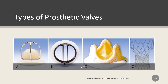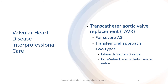Valve types shown include: A — the Starr-Edwards caged ball valve; B — the St. Jude's bi-leaflet valve; C — the Carpentier-Edwards porcine valve; and D — the CoreValve transcatheter aortic valve. Transcatheter aortic valve replacement, or TAVR, is an option for patients with severe symptomatic aortic stenosis who are at intermediate risk or higher for surgical aortic valve replacement, or SAVR.